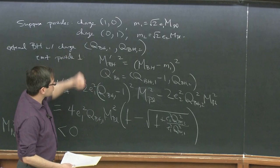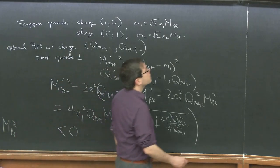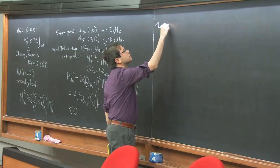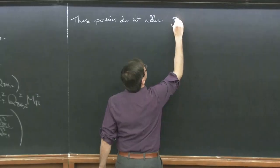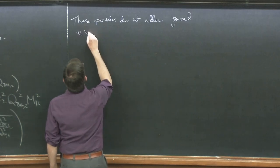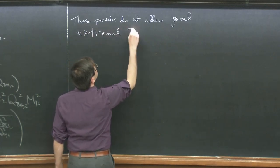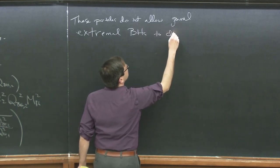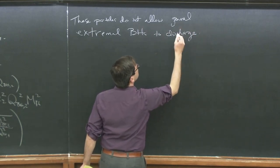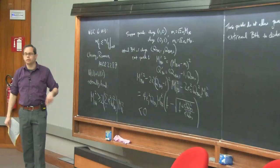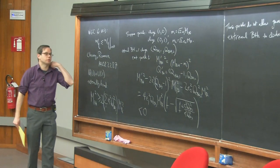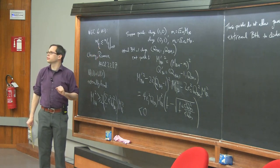So adding these two particles is not sufficient to allow extremal black holes to discharge. This tells us that whatever the right condition is for a theory with more than one gauge group, it's going to be more complicated than just saying you have to individually obey the bound for each gauge group independently.